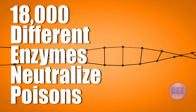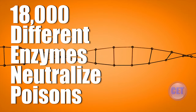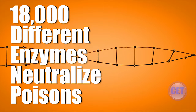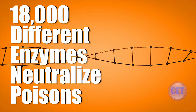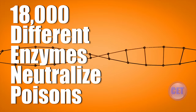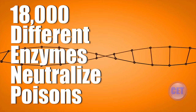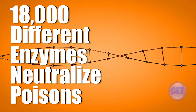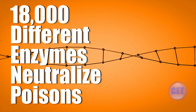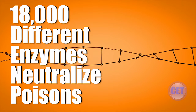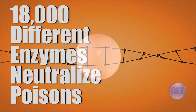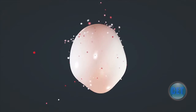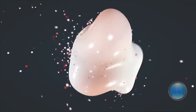Today, every living organism on the planet of any complexity has 18,000 different enzymes that it can call on to neutralize poisons it might encounter throughout its life. The cells don't make those enzymes unless the poison is present. If the poison is present, then the cell is induced to make the enzymes.